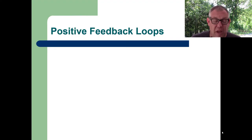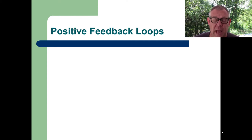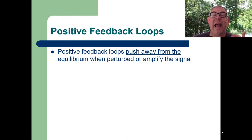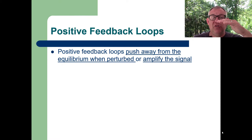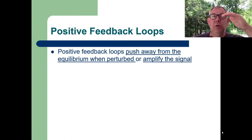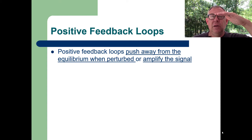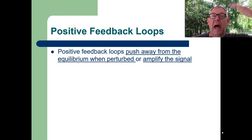If you have a negative feedback loop, you also have a positive feedback loop. These are not as common, but they can be important. Positive feedback loops push away from an equilibrium when perturbed, or they amplify the signal. You're sitting at an equilibrium, and once you get pushed off it, the positive feedback loop pushes you further from the equilibrium — it amplifies and goes out of control.